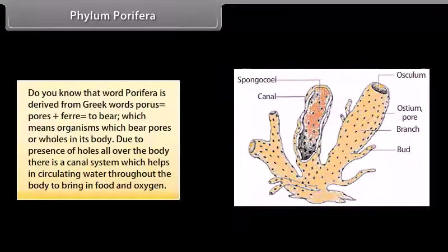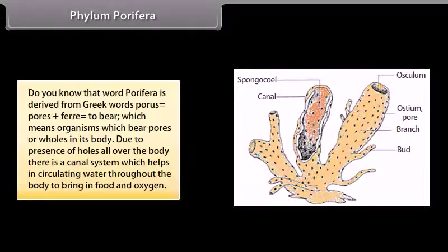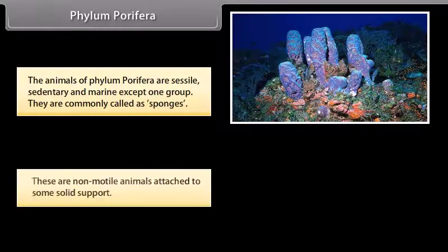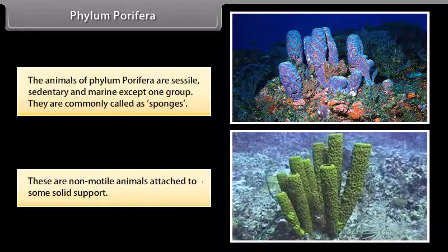Phylum Porifera. The word porifera is derived from Greek words: porous, which means pores, plus ferre, to bear, which means organisms which bear pores or holes in their body. Due to the presence of holes all over the body, there is a canal system which helps in circulating water throughout the body to bring in food and oxygen. The animals of phylum Porifera are sessile, sedentary, and marine except one group. They are commonly called sponges. These are non-motile animals attached to some solid support.